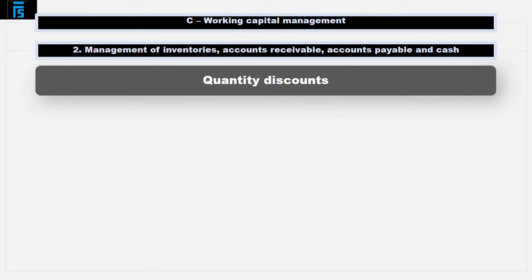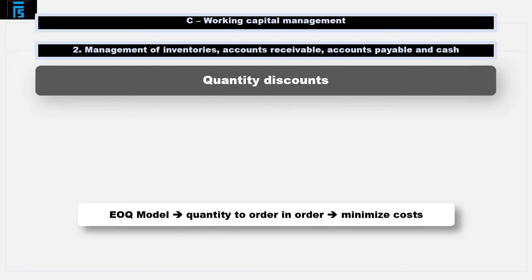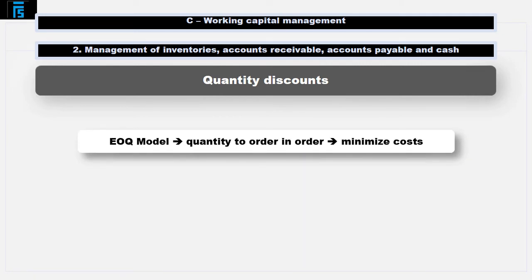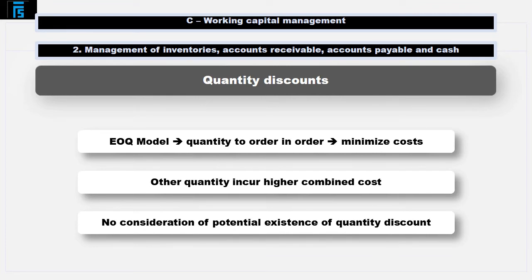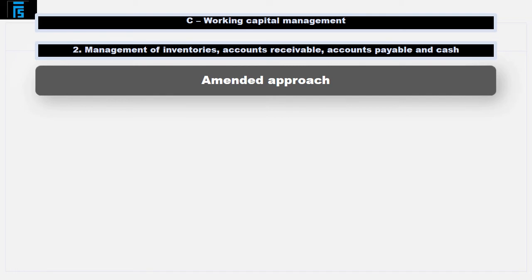As discussed already, the EOQ model identifies the quantity to order in order to minimise inventory costs, i.e. the cost of ordering costs and holding costs combined. A business that is placing orders for any other quantity will incur a higher combined cost for C-O and C-H than is necessary. However, as also discussed, the model does not consider the potential existence of quantity discounts and will not consider this aspect where they do. Accordingly, where discounts are offered by suppliers, an amended approach is required.